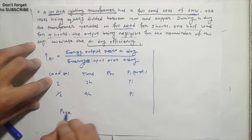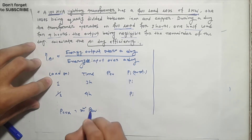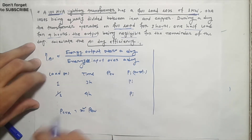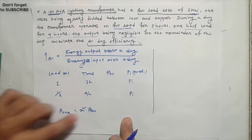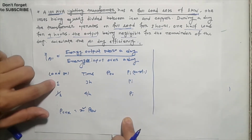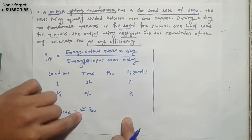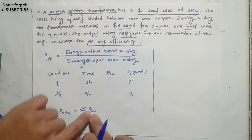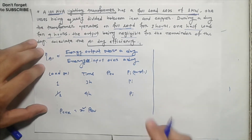The copper loss is given by x-squared times PCU, where PCU is full load copper loss. So x-squared is the fraction of load squared. For full load, x is 1 squared; for half load, x is one-half squared. PCU is the full load copper loss.